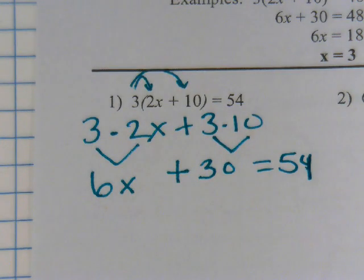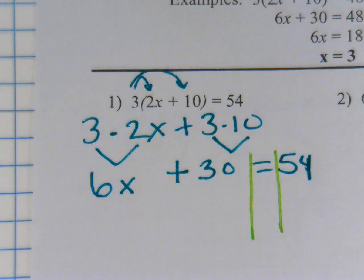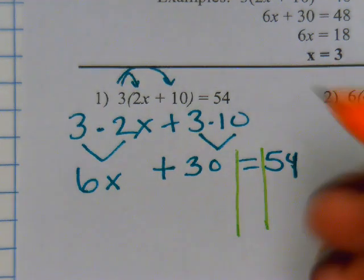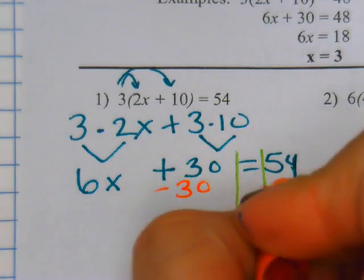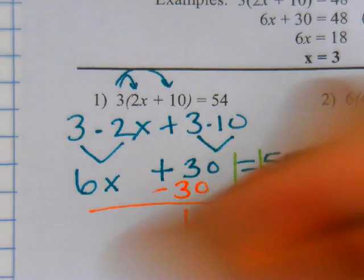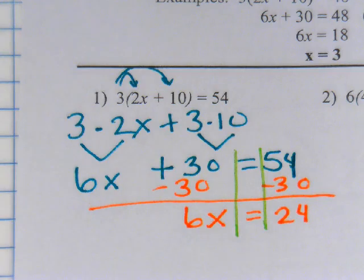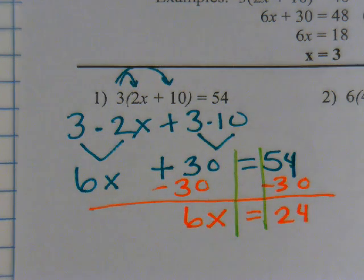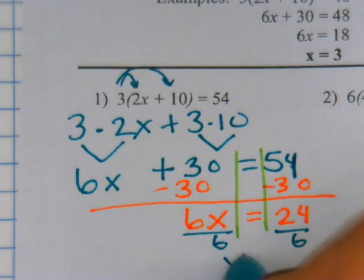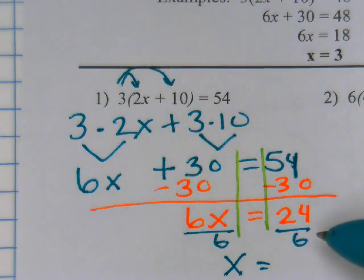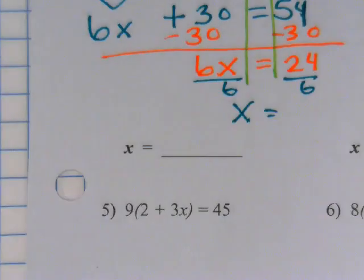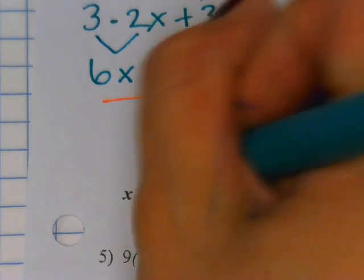And then this all still equals 54. Now we're going to draw our bars. What number do we move first? 30. So minus 30. And then how do I move the 6? Divide by 6 because they're together, they're attached. 24 divided by 6 is 4. So we're going to write 4 on the line.